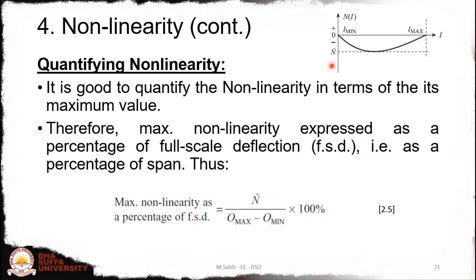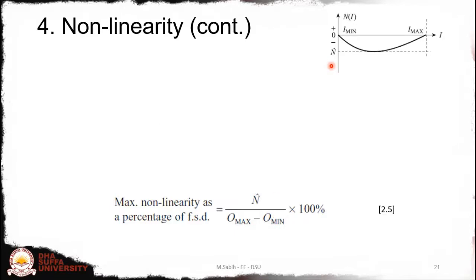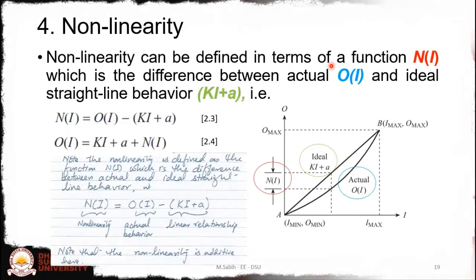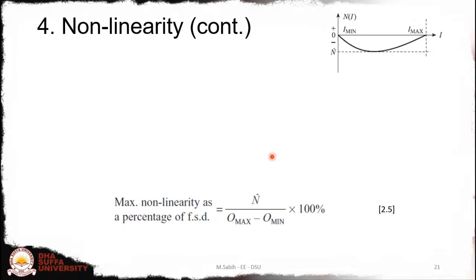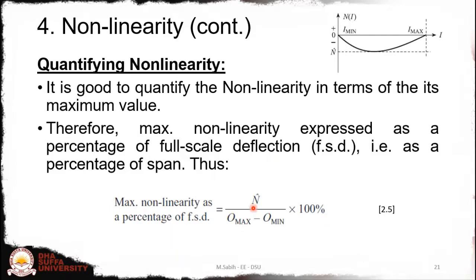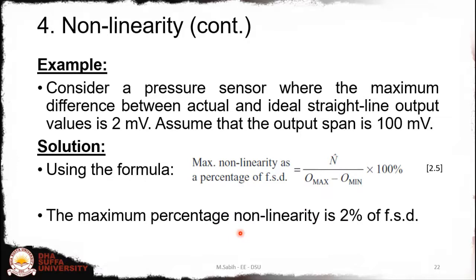Since nonlinearity is basically an output quantity, it appears on the output axis rather than the x-axis. To calculate the maximum percentage nonlinearity, we divide n-hat by the full-scale deflection — that is, the span of the output. This maximum will be divided by the output span to give the maximum nonlinearity as a percentage.